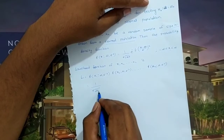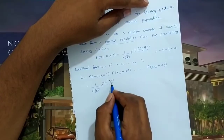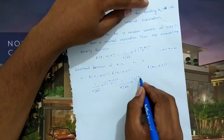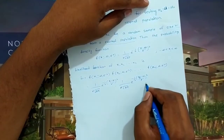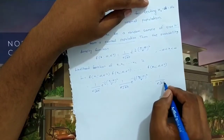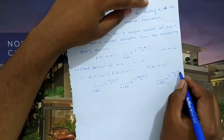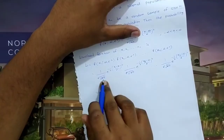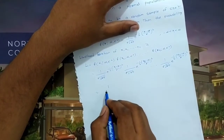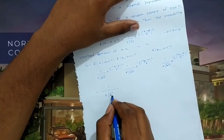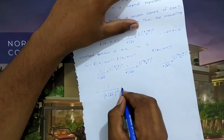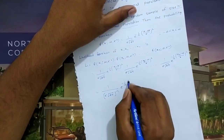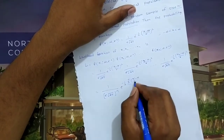The likelihood function is: (1/σ√(2π)) × e^(−((x1−μ)/σ)²) × (1/σ√(2π)) × e^(−((x2−μ)/σ)²) × ... and so on. Since the base e is the same, the powers are added, giving summation i=1 to n of (xi − μ)/σ whole square.